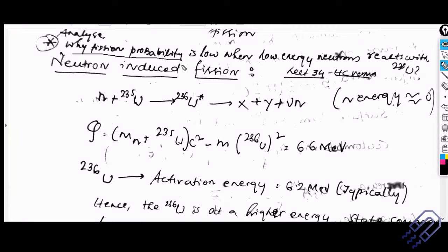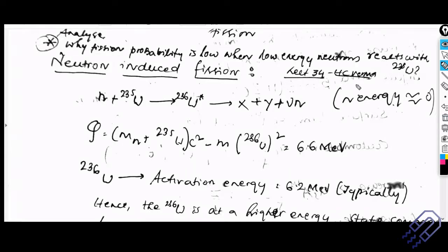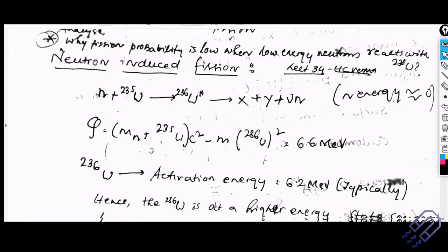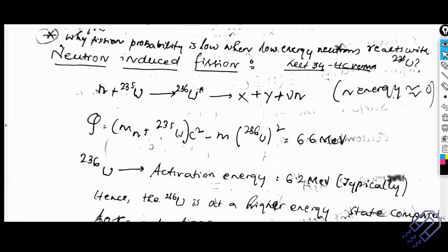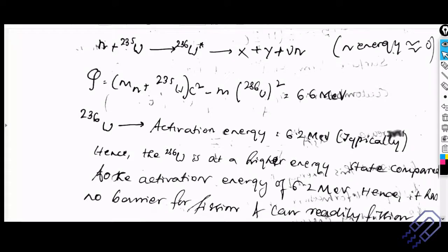The main aim of today's class: why is fission probability low when a low-energy neutron reacts with uranium-238? In practical nuclear reactors, uranium-235 is mostly used as fuel, while uranium-238 is not. So the question is why uranium-235 is more popular as a nuclear fuel than uranium-238, and that is what we are going to find an answer to today.